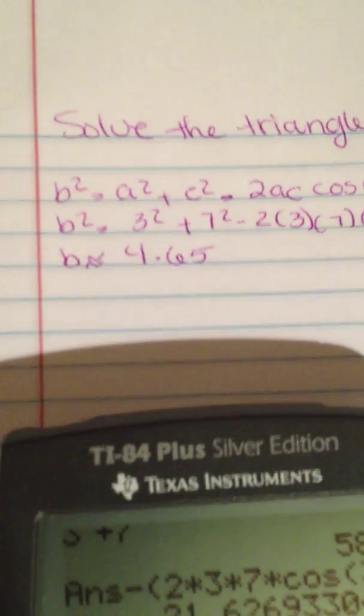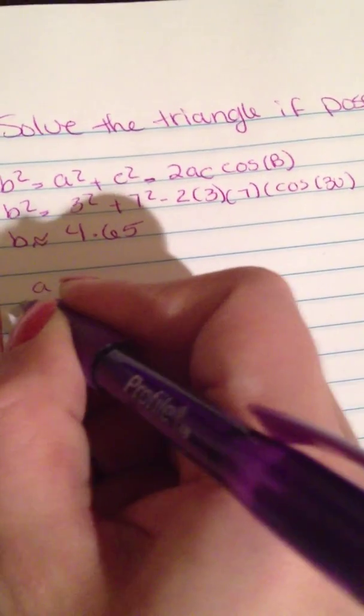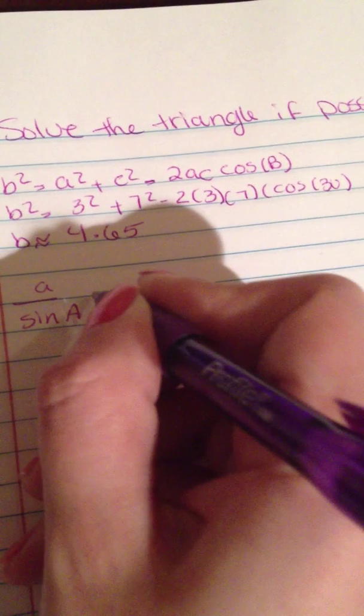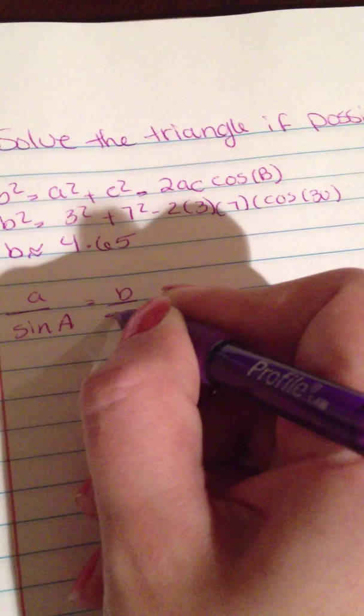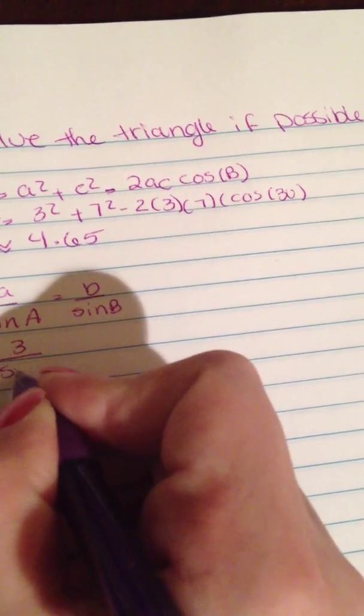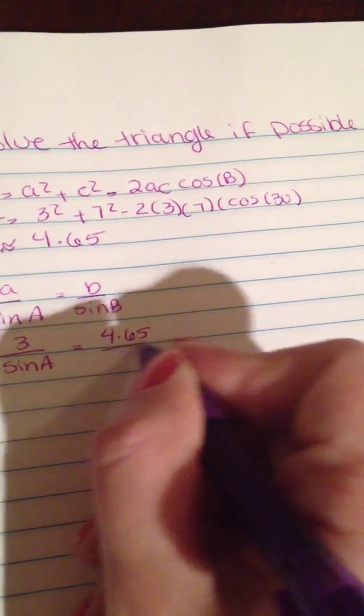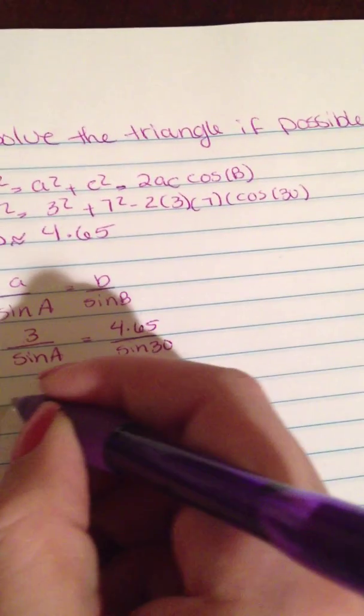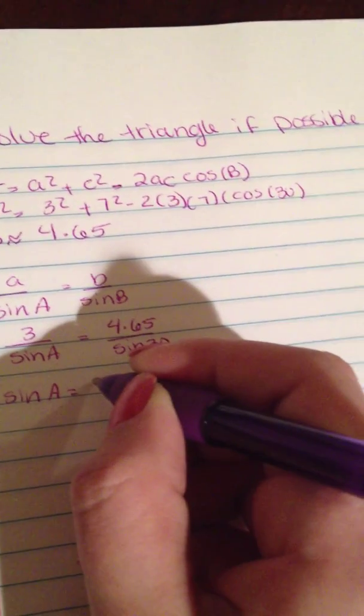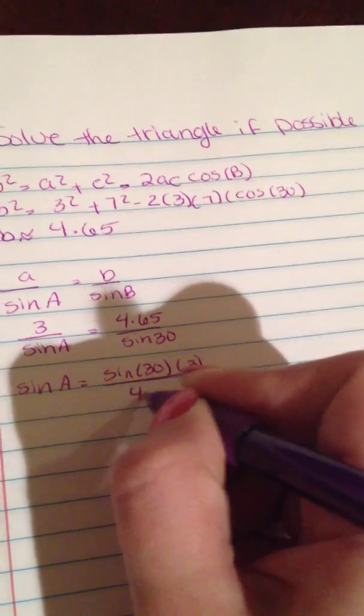That's my b. So I need to find angle A. I'll use the law of sines, which is a/sin(A) = b/sin(B). So 3/sin(A) = 4.65/sin(30°).